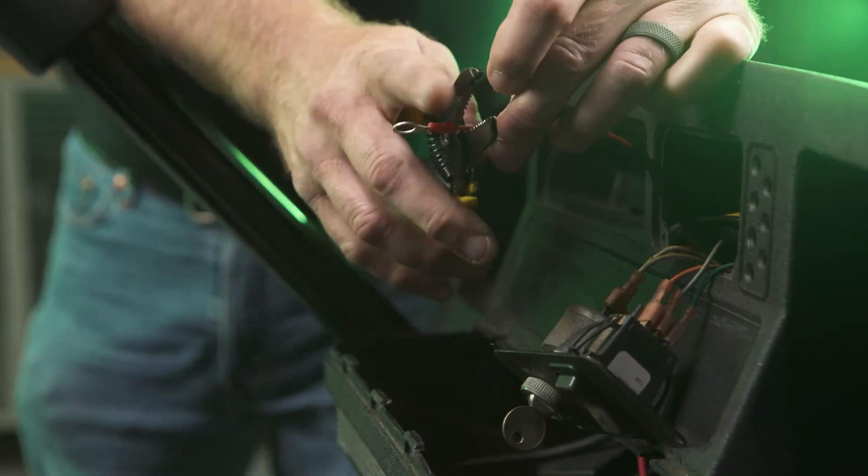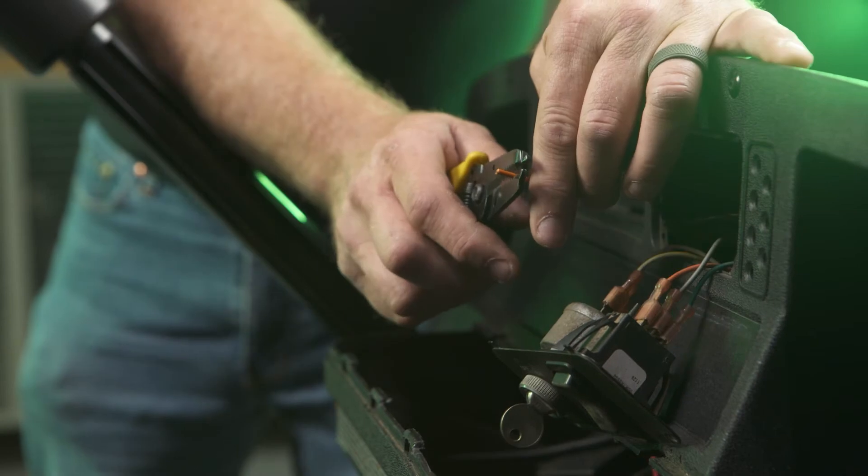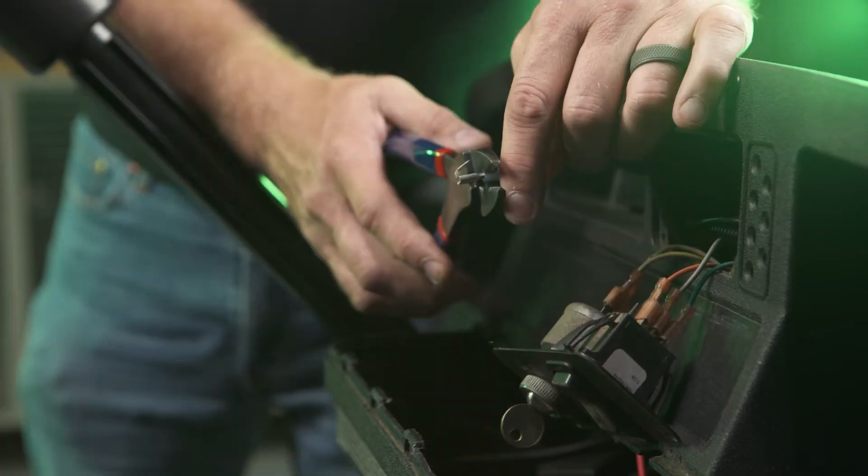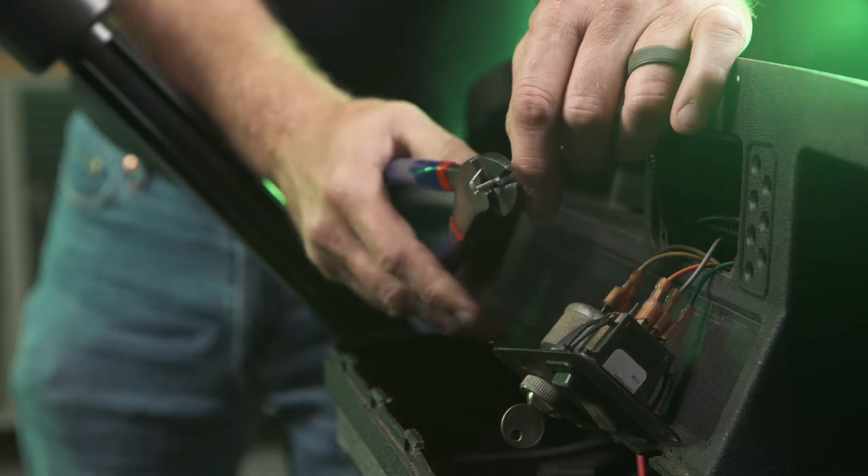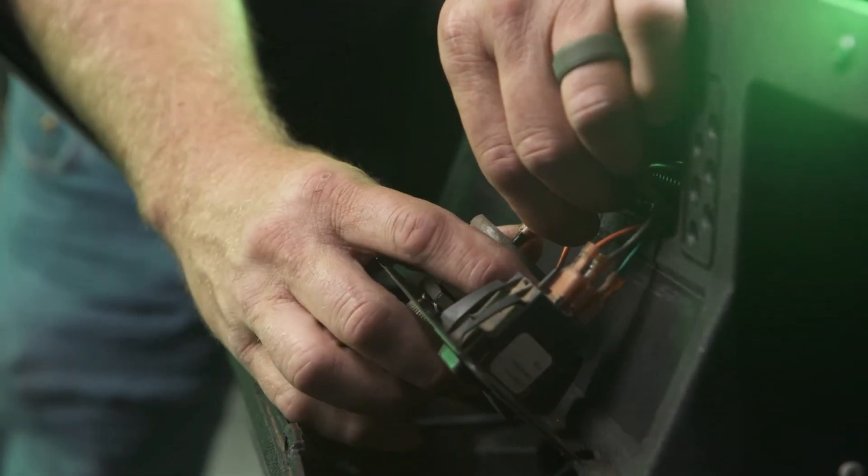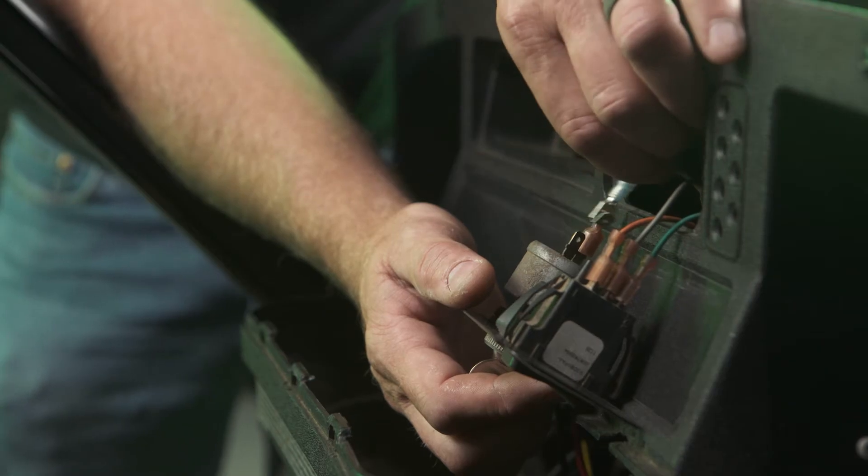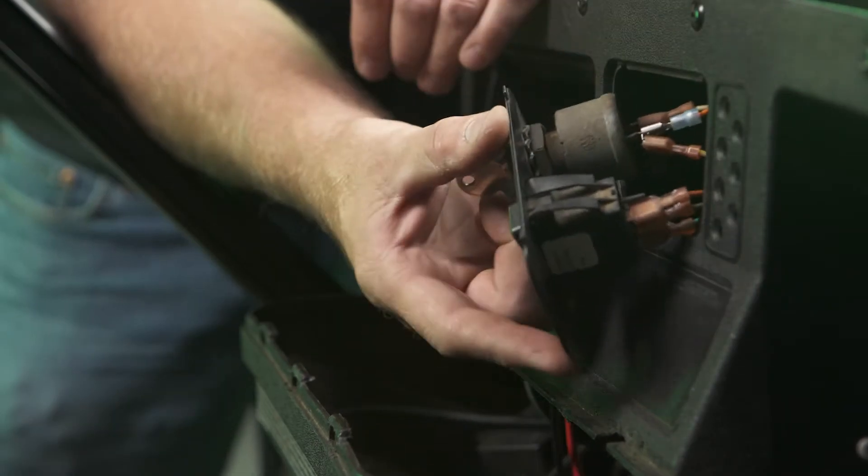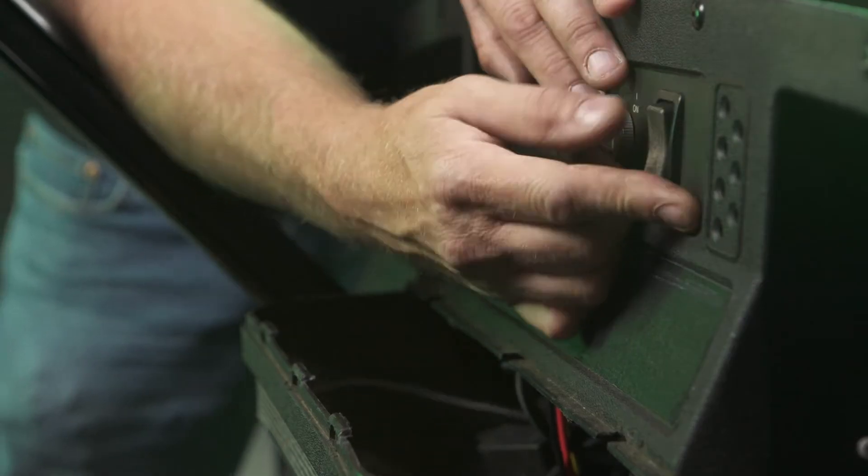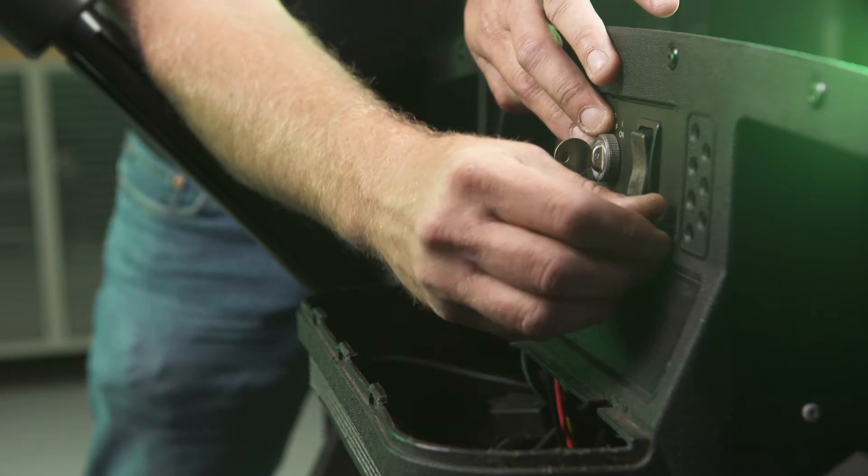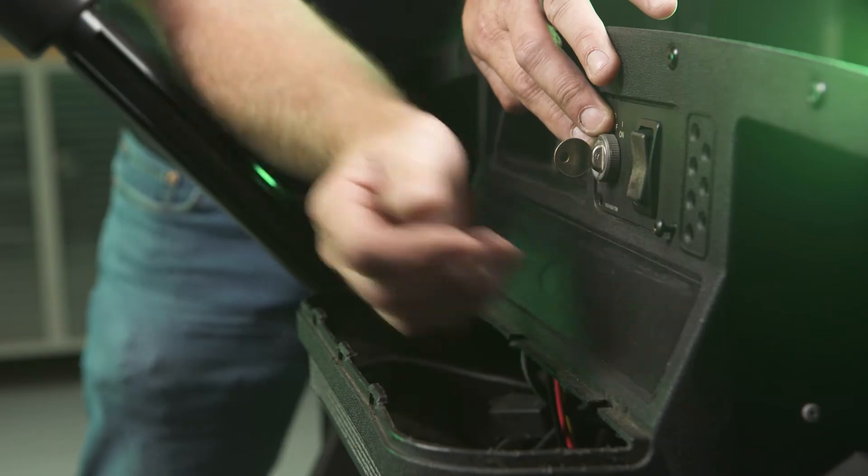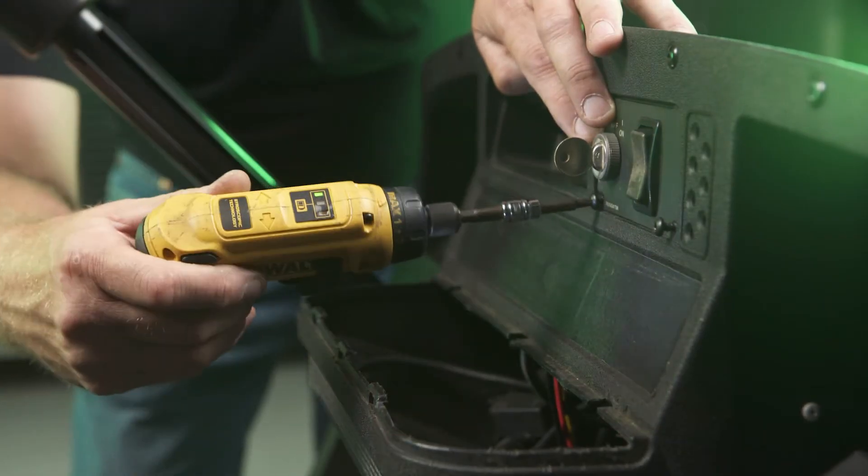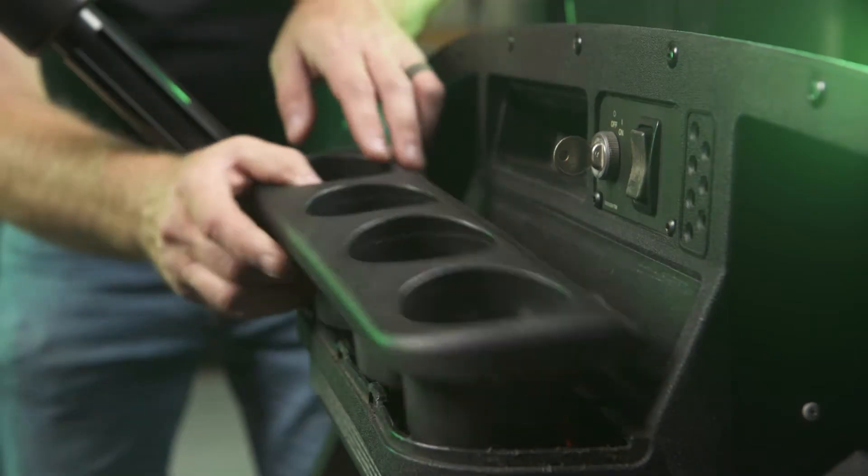Locate the constant power wire on the back of the key switch. Combine this wire and the orange DC to DC key on power wire together in a single spade connector or use a piggyback spade connector. Reinstall on the key switch terminal. Reinstall your cup holder.